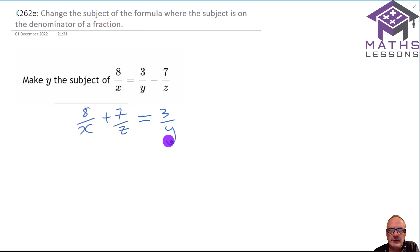To turn this into a single fraction, we need to work out the common denominator. We've got this over x and this over z. So a common denominator would be something they both go into, so they both go into xz. Times top and bottom this by z, we get 8z over xz. Times top and bottom this by x, we get 7x over xz again.